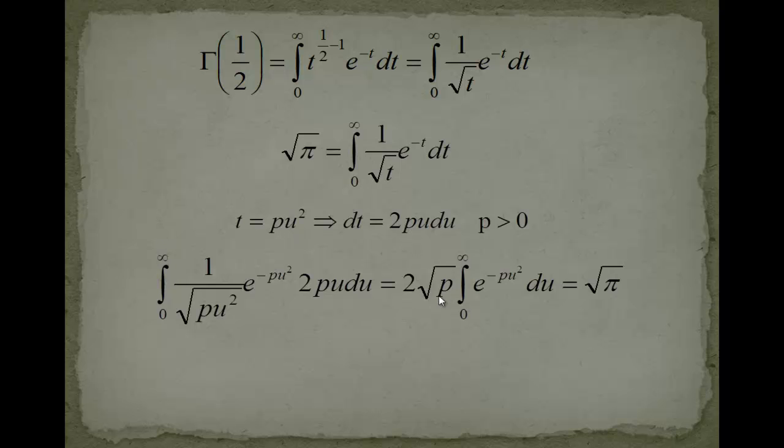So, what we get here is 2 square root of p from 0 to infinity, e to the minus pu squared du.